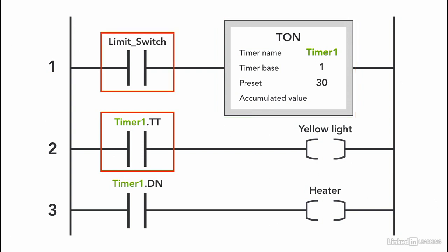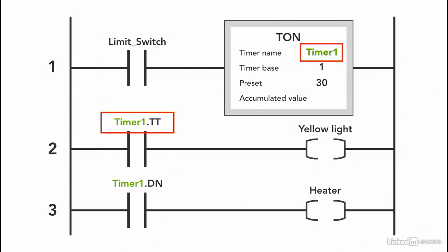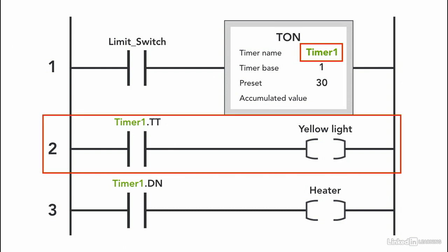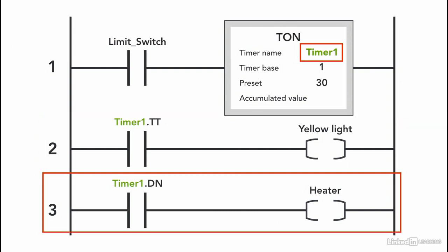The program works this way: once the limit switch is true, the first rung is true and the timer starts timing. The timer timing bit in the second rung is true as soon as the timer starts timing and stays true as long as the accumulated value is less than the preset. Note that we use the same timer name but specify the timer timing bit. As soon as the timer is done timing, the timer timing bit goes false and the light turns off. Then the timer done bit goes on in the third rung and the heater starts.